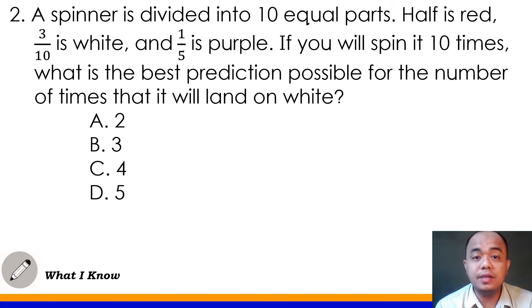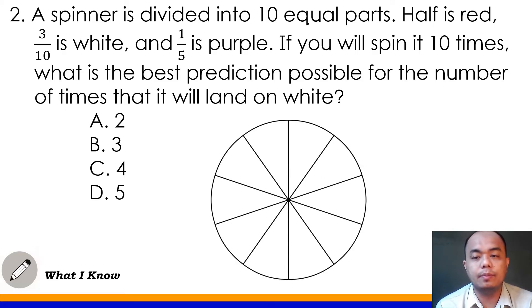Number 2. A spinner is divided into 10 equal parts. Ito yung example ng spinner class. Half is red. Meaning kalahati daw ng spinner natin ay color red. So lalagyan natin yan ang label na red. 1, 2, 3, 4, 5.